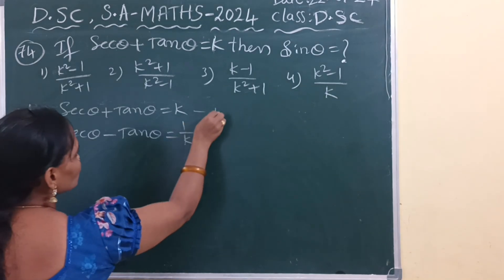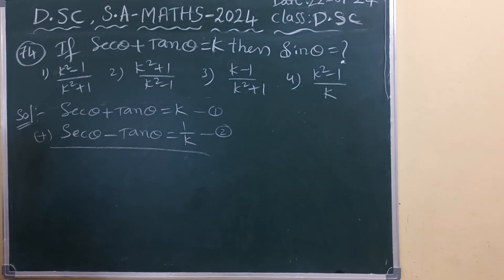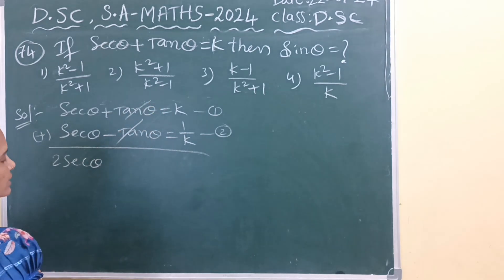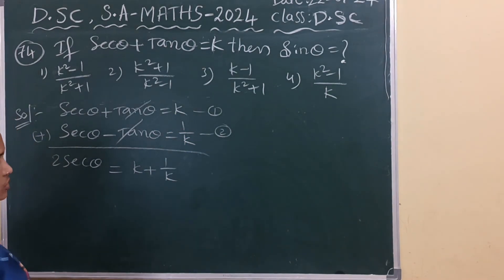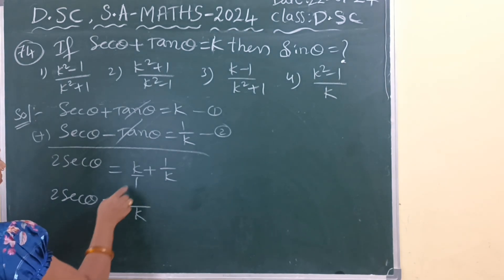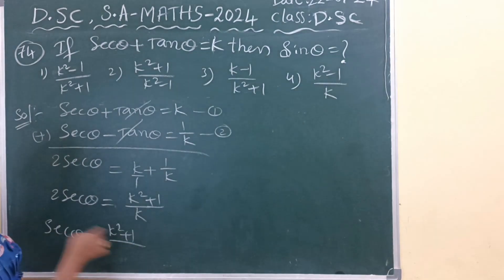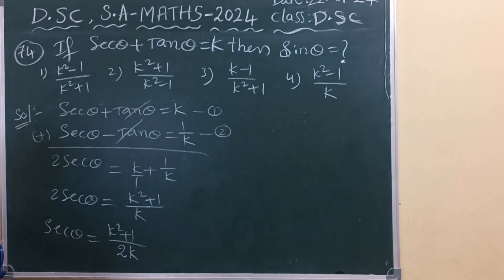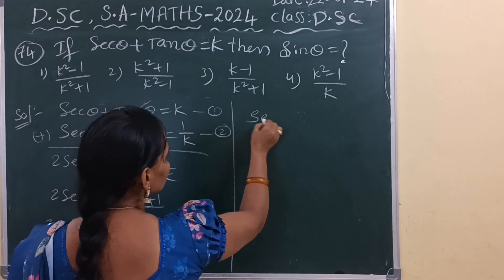Let us call these equation 1 and equation 2. Now add equation 1 and equation 2. When we add: sec theta plus sec theta gives 2 sec theta; plus tan theta minus tan theta cancels. On the right side, k plus 1 by k — taking LCM, k is the denominator — gives k squared plus 1 over k. So sec theta equals k squared plus 1 divided by 2k. Call this equation 3.